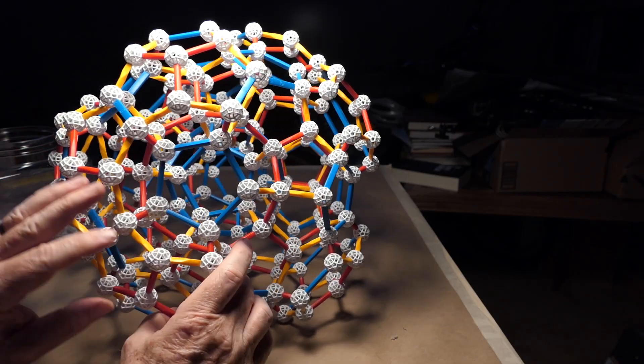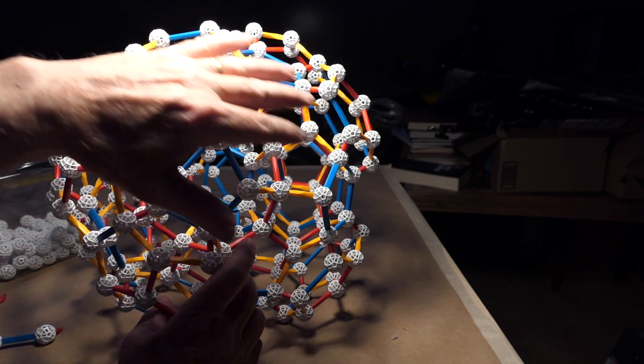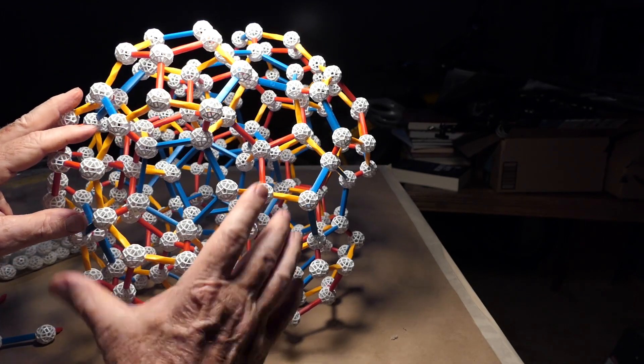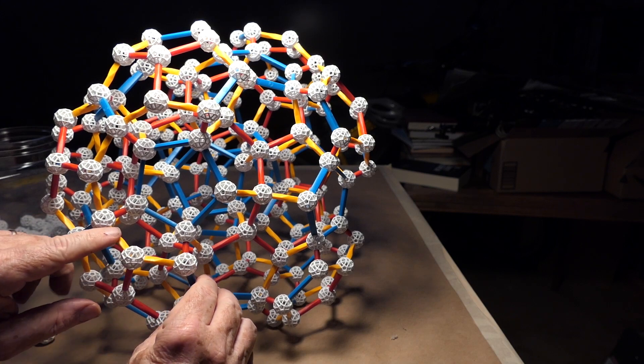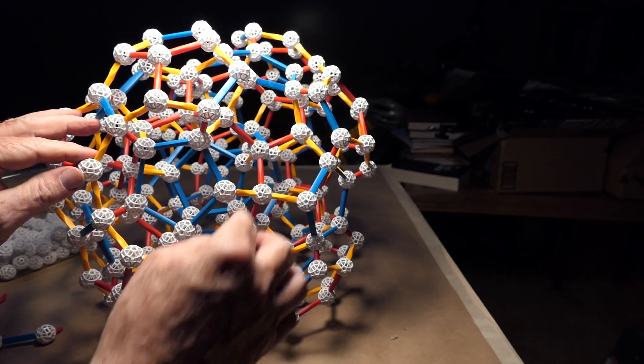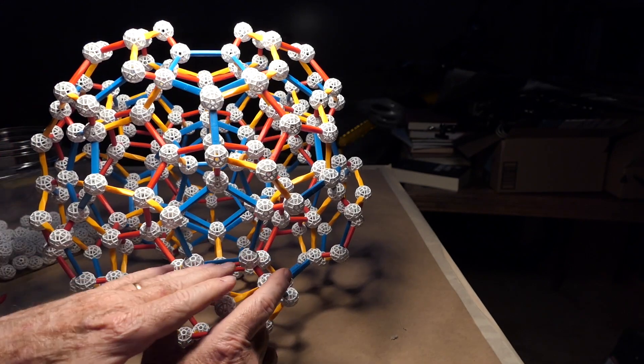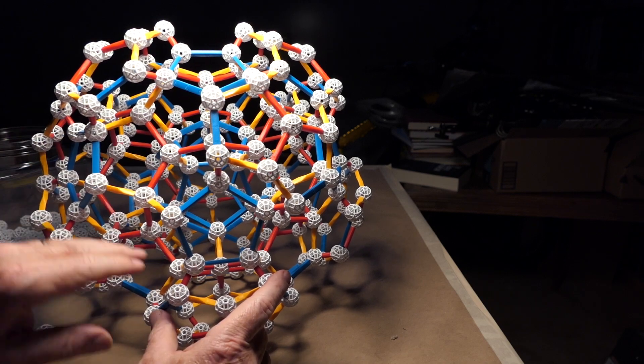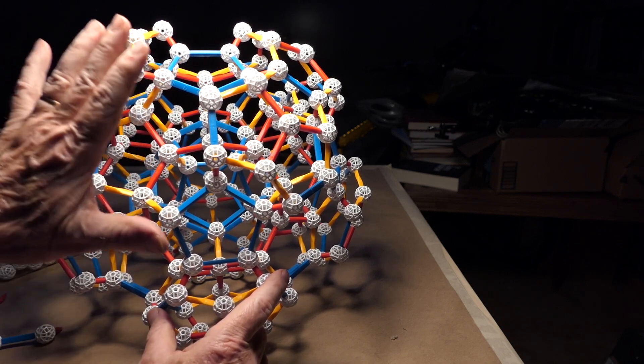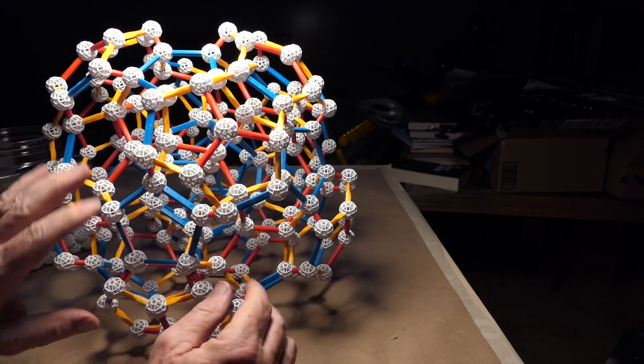So you can see the pattern here. We've been adding these flattened dodecahedrons around here. And they're forming kind of a yellow ring. And we have one, two more to do on this axis. So each of these pentagons will have a yellow ring of flattened dodecahedron around them.